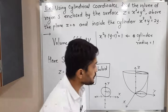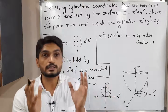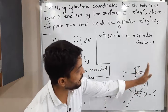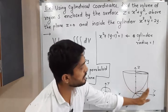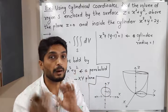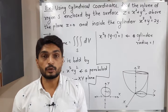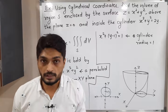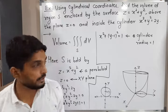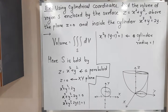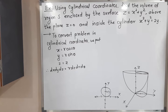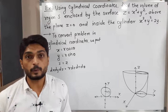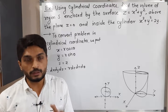The region is bounded by the xy-plane, enclosed inside the cylinder, and bounded above by the paraboloid. There is a region below the paraboloid, above the xy-plane, and inside the cylinder — that is our region of integration. We convert the problem to cylindrical coordinates: x = r cos θ, y = r sin θ, z = z, so dx dy dz becomes r dz dr dθ.